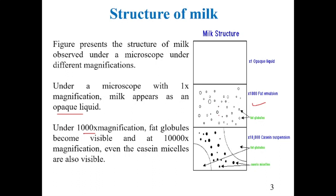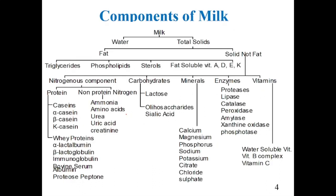At even higher magnification beyond 1000 times, the casein micelles also become visible. The average size of casein micelles is around 360 nanometers. So if you further increase the magnification, even the casein micelles are visible.